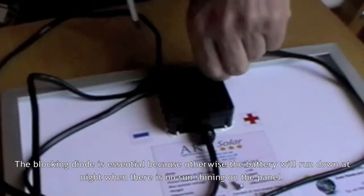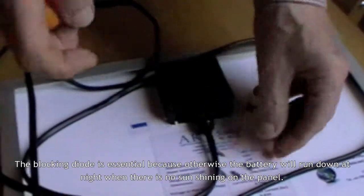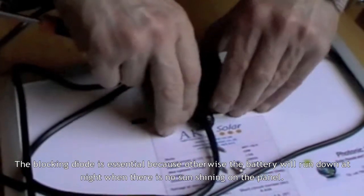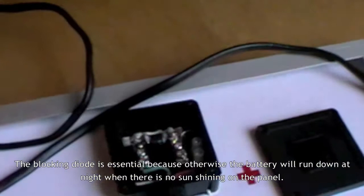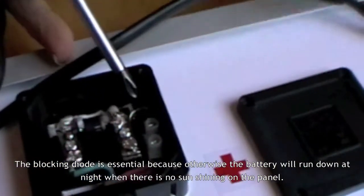So during the day, the panel produces electricity, puts it into the battery, and if there's no diode there at night, when the panel's not producing electricity, it would flow out from the battery. It's easy. That's the diode.